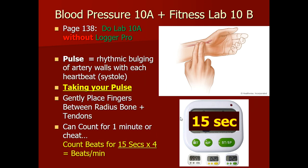Normally today we'd do a lab where we use ice water and exercise to stress you out. You learn how to measure blood pressure and heart rate. For heart rate, it's straightforward: put two fingers in the notch on your radial artery and feel the pulse — that's the pressure of your ventricles contracting. Count beats for 15 seconds, then multiply by four. If you're in the range of 50 to 60 beats per minute, you're doing pretty good.